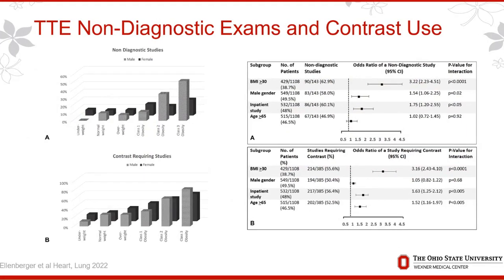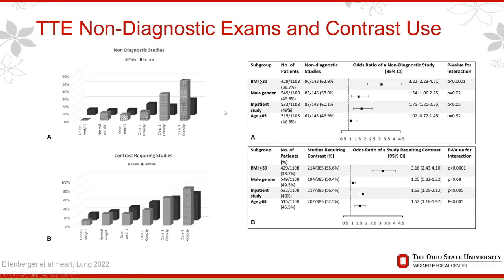Not surprisingly, with increased BMI, particularly in men, there was a higher risk of non-diagnostic images — up to over 50%, in fact — and an increased use of contrast for these patients. A forest plot demonstrates that a higher BMI, particularly over 30, gives at least a 60% chance that these studies may potentially be non-diagnostic and not able to answer the clinical question.